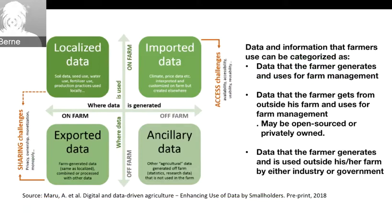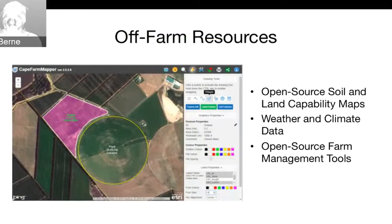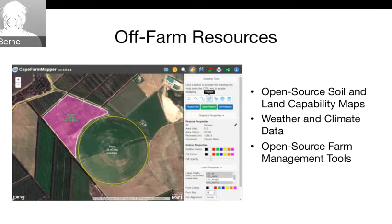When you send data up to someone providing advice on how to seed or irrigate, they have that data and if they're getting it from other farmers, they're putting it together in an aggregated way — and that aggregated data has value. One of the key issues is how do we make sure farmers also participate in that value? Off-farm resources include open source soil and land capability maps that can tell you what your soil looks like, the terrain, and crops that fit well with it.